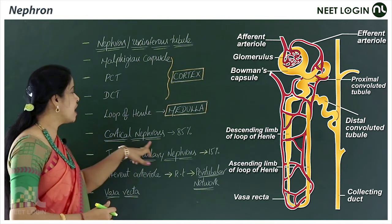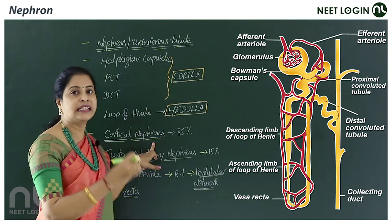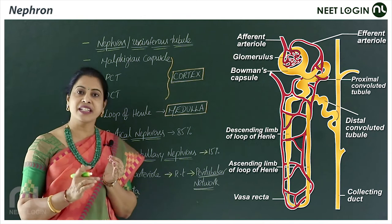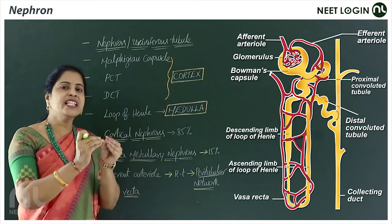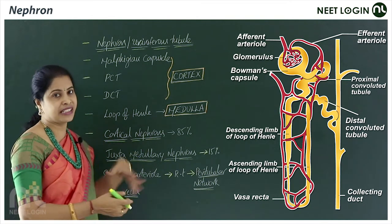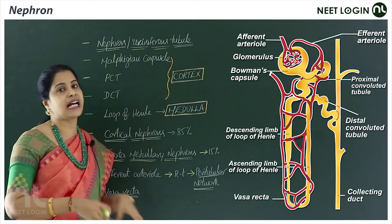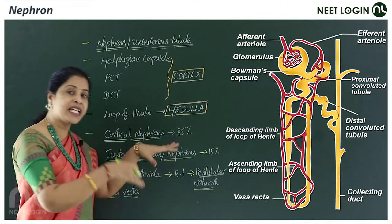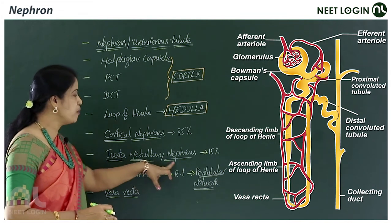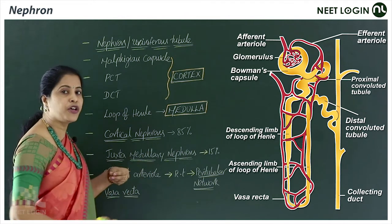Based on this, there are two types of nephrons. Cortical nephrons are the majority — in them, the loop of Henle is short and only a small part extends into the medullary region, so most of the nephron is located in the cortex.